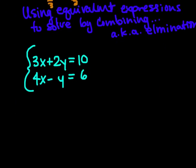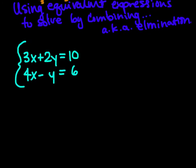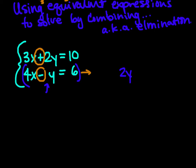We also need to use equivalent expressions to solve by combining or elimination. For this last problem, we have 3x plus 2y equals 10 and 4x minus y equals 6. If we just combined them directly, we wouldn't lose any of our x's or y's — and that's what we want: a variable to disappear. I notice on my y terms I have a positive 2y and a negative y. I'm going to use that to my advantage by multiplying the second equation by 2 to make it negative 2y.